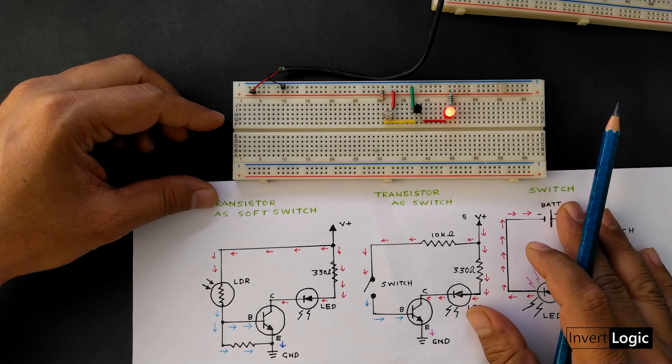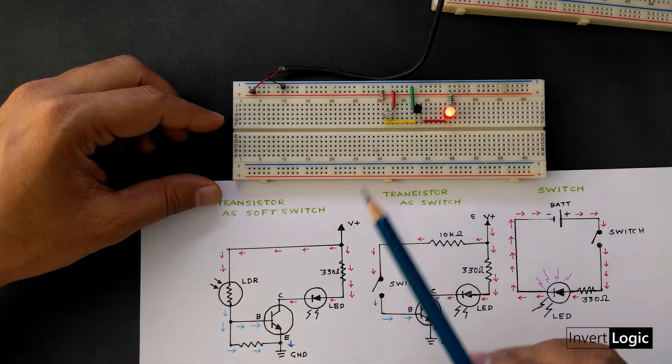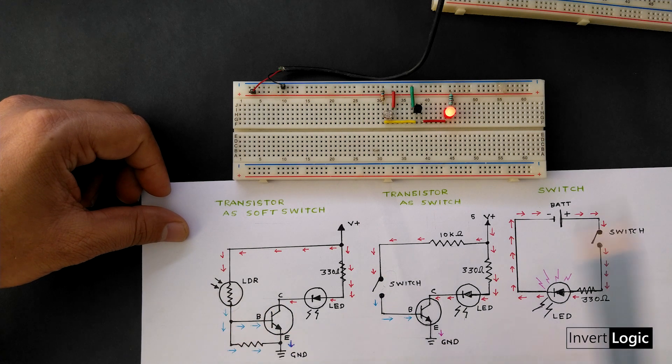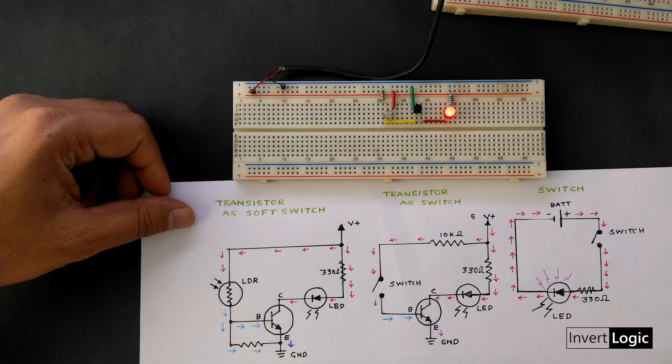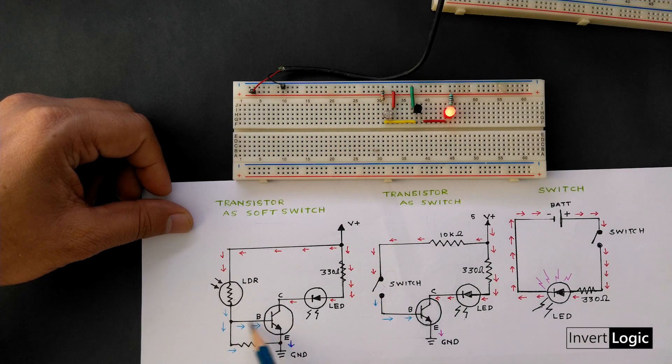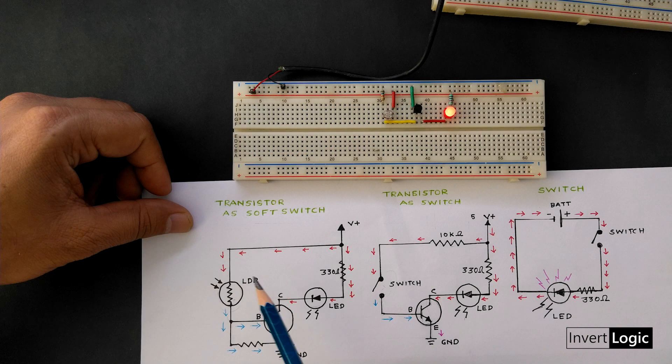I like to use this LDR to generate signal. So instead of using this small tactile switch, we will use the light to turn on or turn off the transistor. So what I did in this schematic is I removed the switch and use this LDR sensor to generate a signal for us.